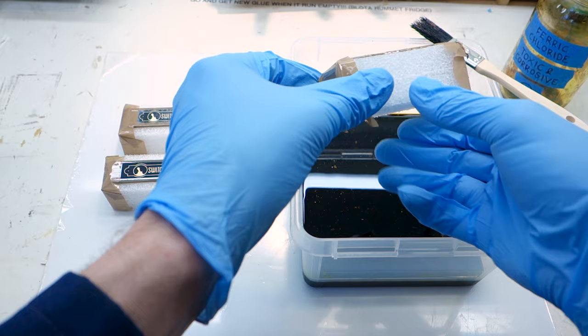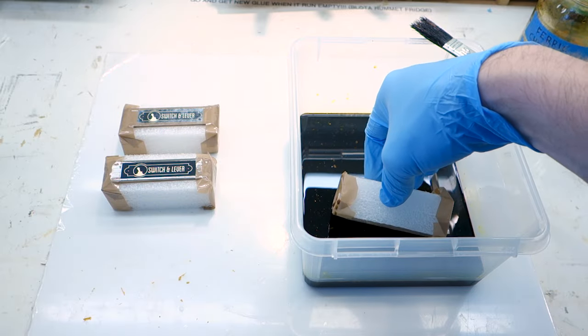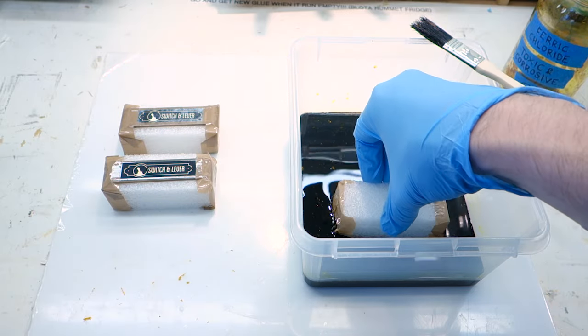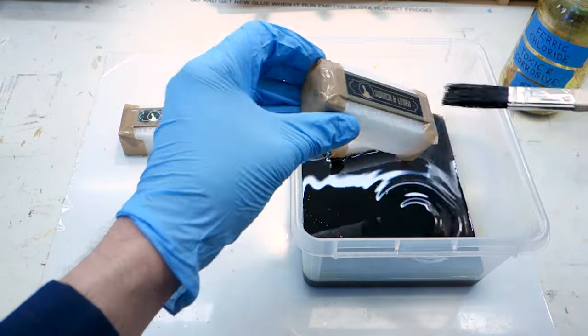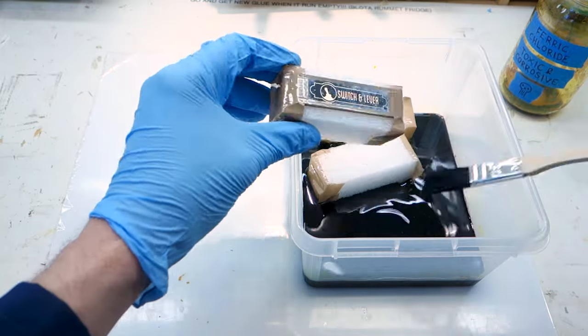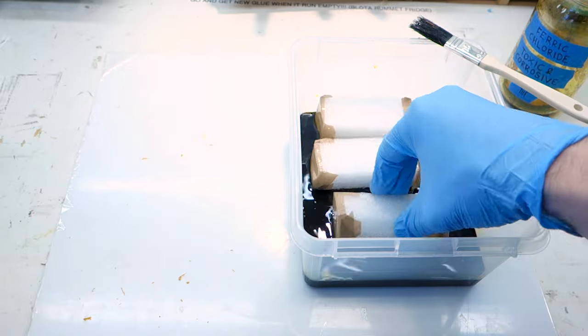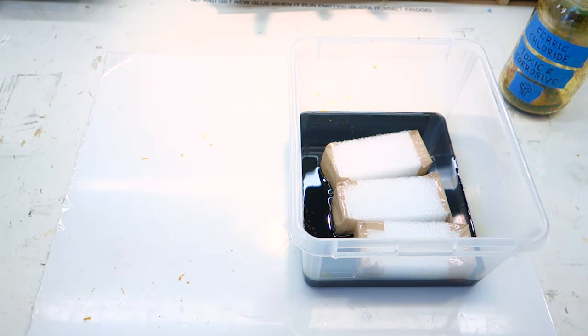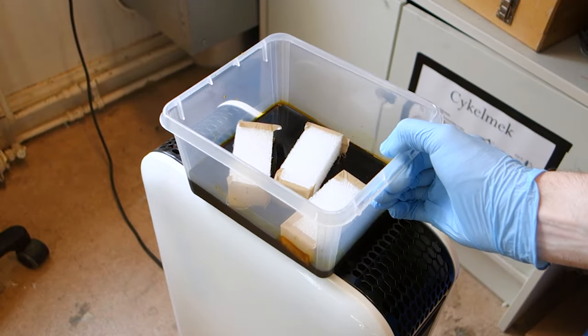Place the plaques down into the etchant, floating happily on the surface, and transfer your plastic box somewhere warm. While the etching process will work at room temperature, it will speed up considerably if put on top of a radiator or even in a tray of hot water.